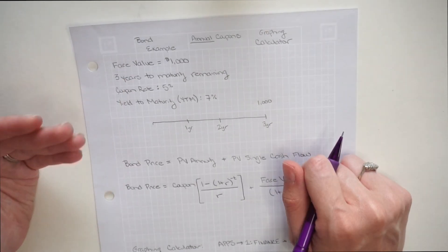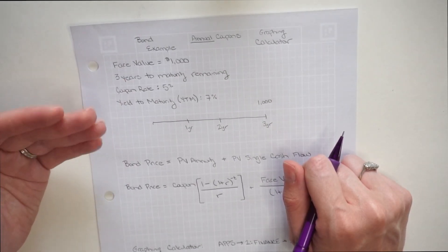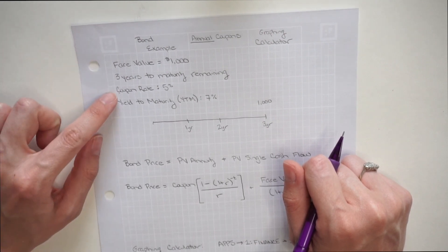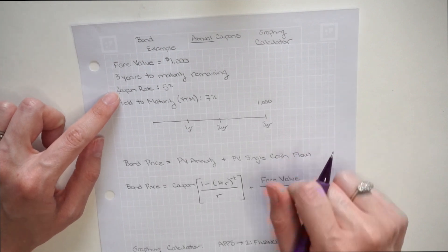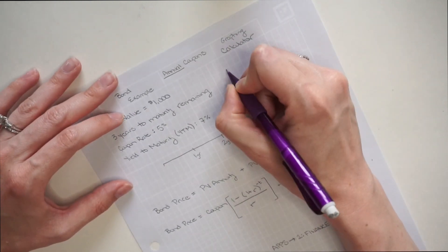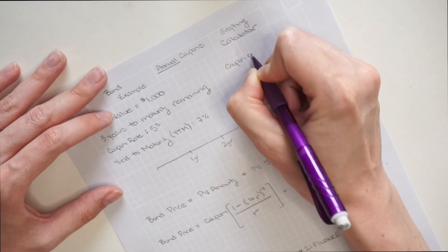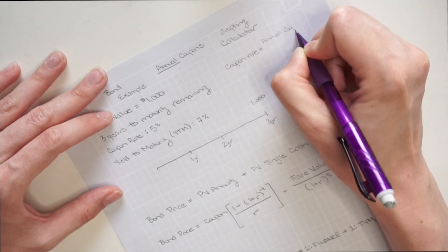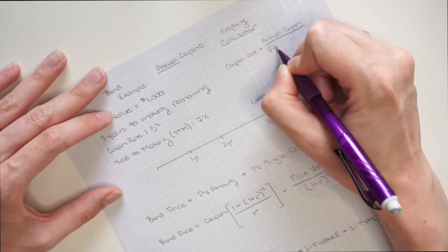Now next up, I need to determine the interest payments that I'm going to receive from this bond, which are the coupons for the bond. We get the coupons for the bond from this coupon rate. The coupon rate equals the annual coupon divided by the face value.